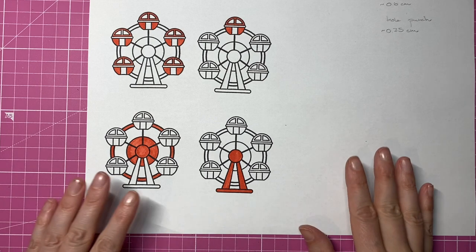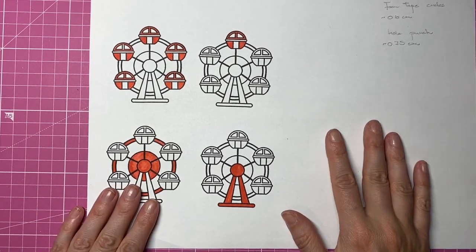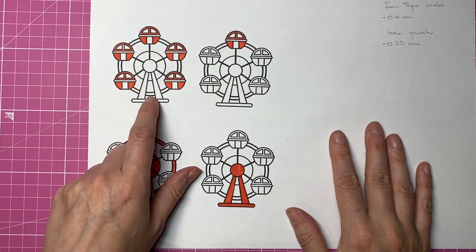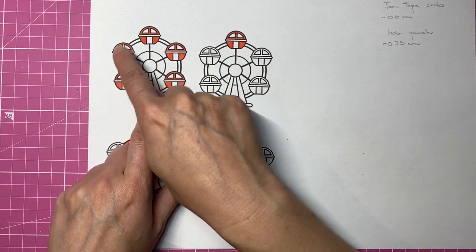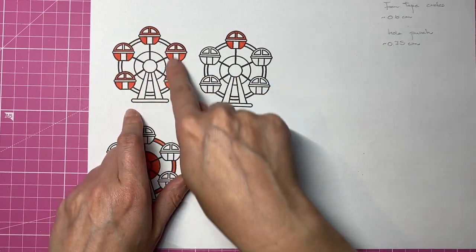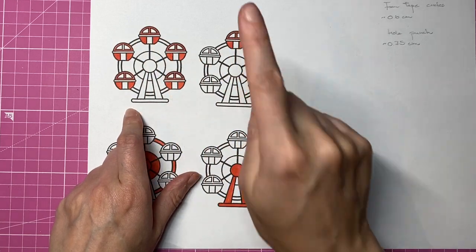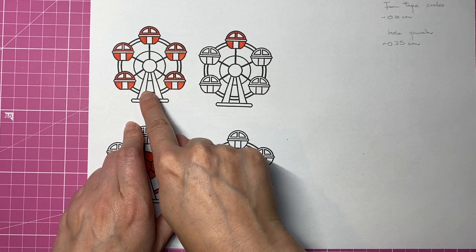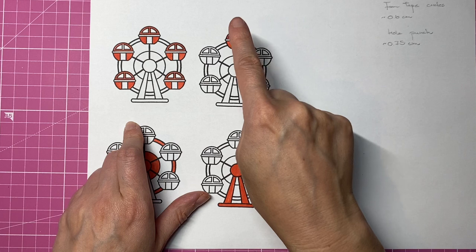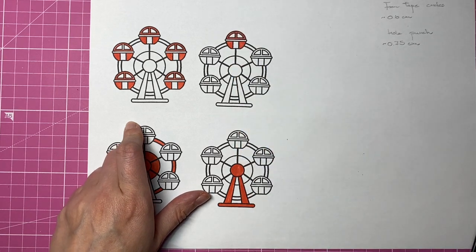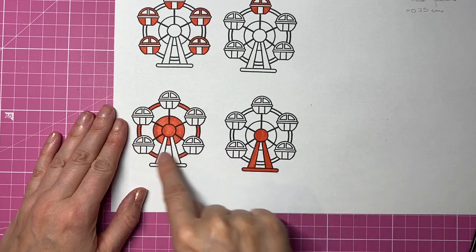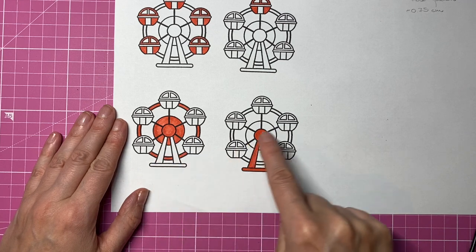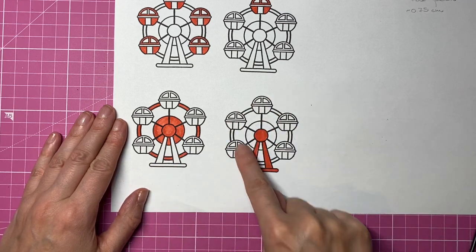To begin, we need to stamp our images, the individual parts of the Ferris wheel. We need six gondolas, meaning we have to stamp the Ferris wheel twice and mask off all the wheel part to be left with the six gondolas. We need six because there's an empty space behind the pole and we need to fill that with the six gondolas. Then we need the wheel part, so we have to stamp it again and mask off the gondolas and the pole. And then stamp it again and mask everything but the pole.